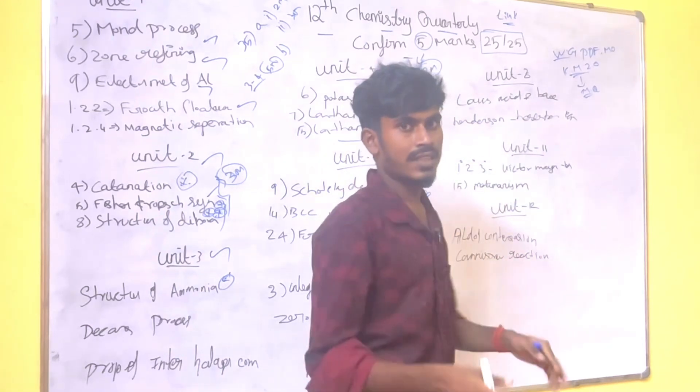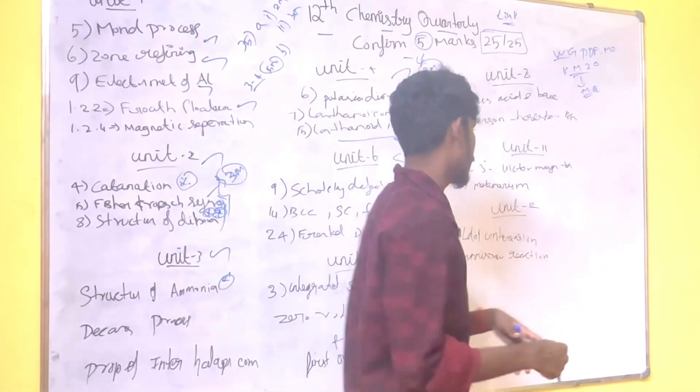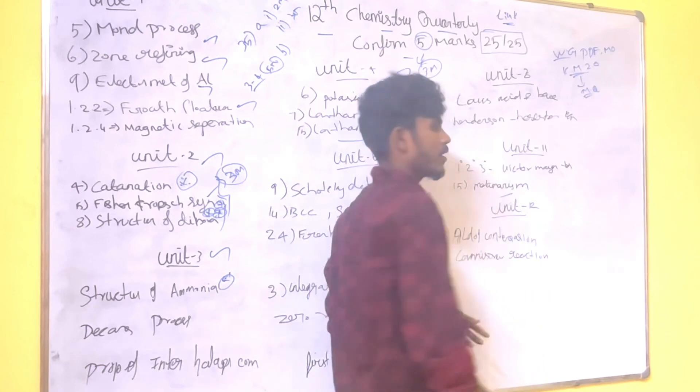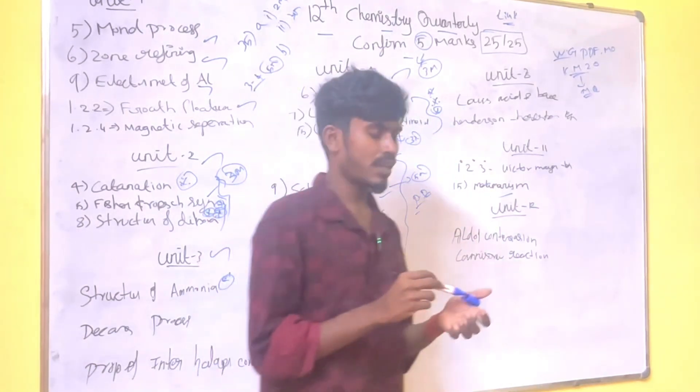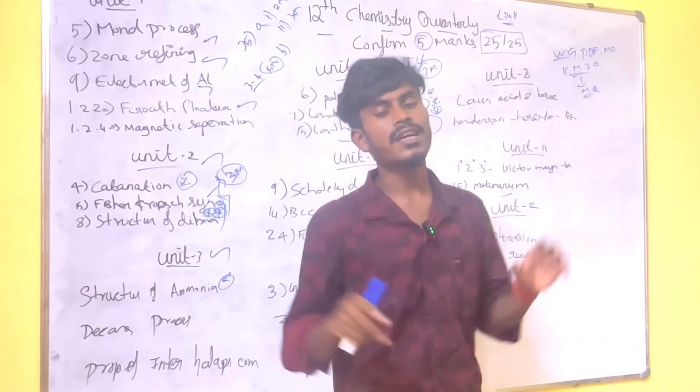Unit 11, 1 degree, 2 degree, 3 degree Victor Meyer test. That's very important. 15th question, metamerism. And even 12th question, aldol condensation and Cannizzaro reaction. This is the 5 marks. This is the question. This is the 12th chemistry, 5 marks.